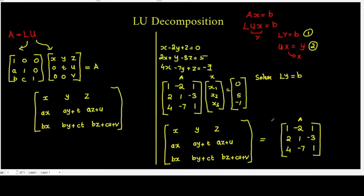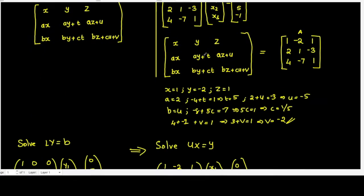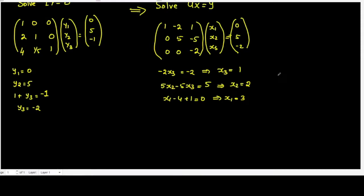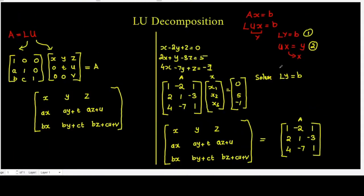So these are the values of x, y, and z. That is x1 equal to 3, x2 equal to 2, and x3 equal to 1. So the value of x equal to 3, y equal to 2, and z equal to 1. This is the solution for the system: x minus 2y plus z equal to 0, 2x plus y minus 3z equal to 5, and 4x minus 7y plus z equal to minus 1.